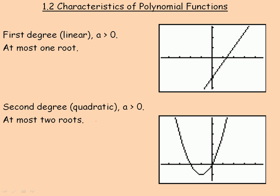Quadratics could actually have one root. If we were to draw the quadratic so it came down and touched in one spot and then went back up, that would have one root. If the leading coefficient was negative and it looked like this and went back down, that one never touches the x-axis at all, so it would have no roots whatsoever.